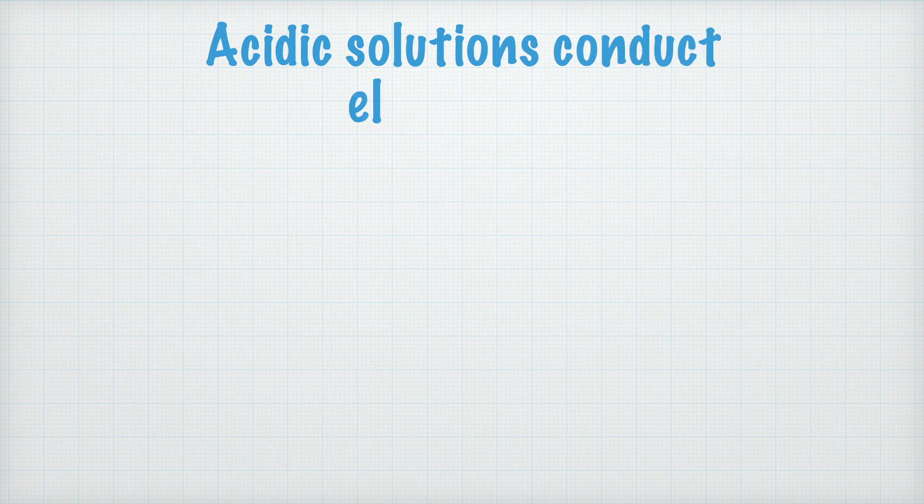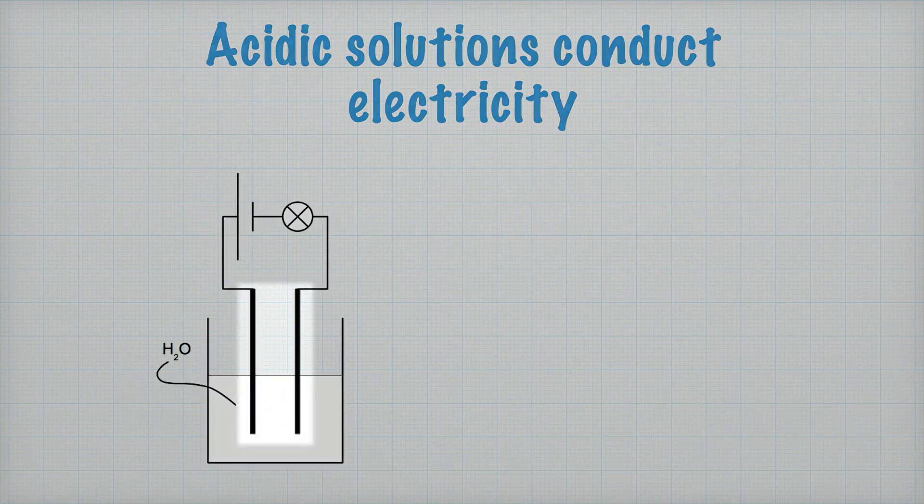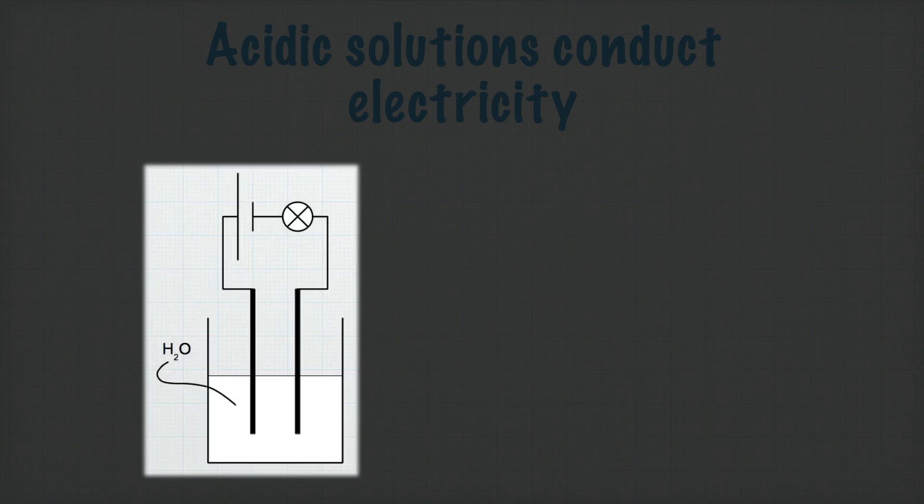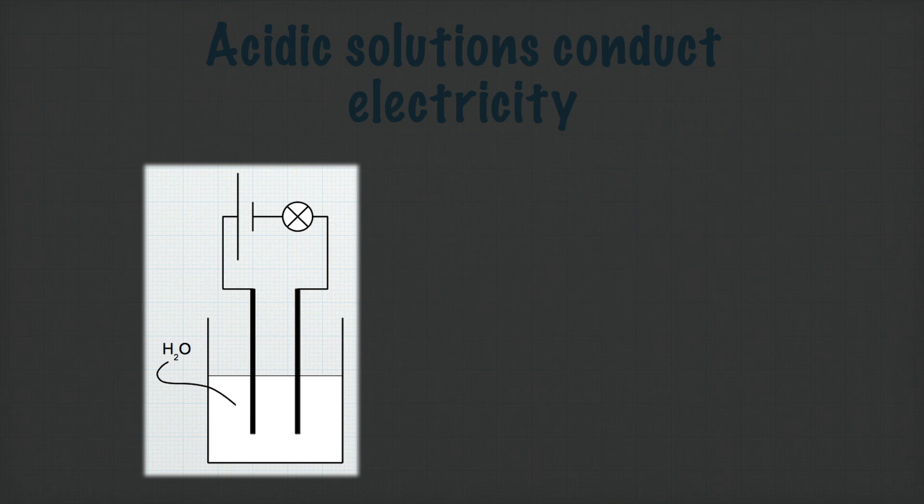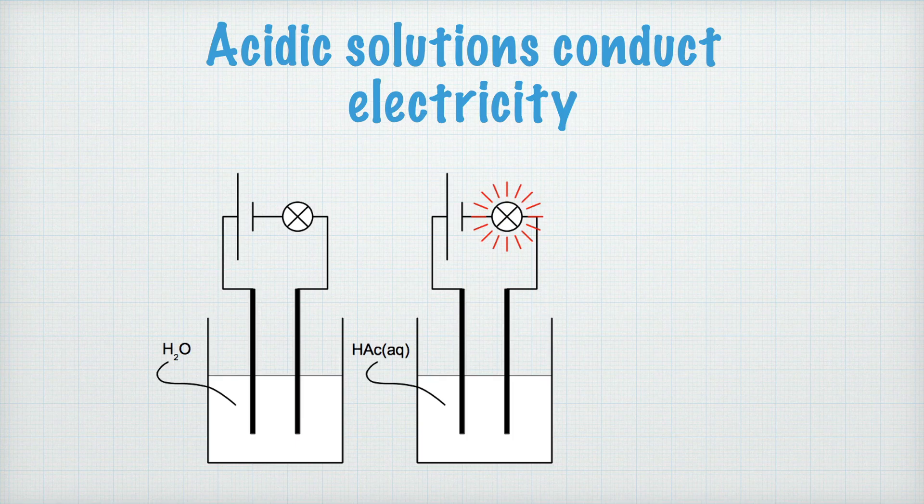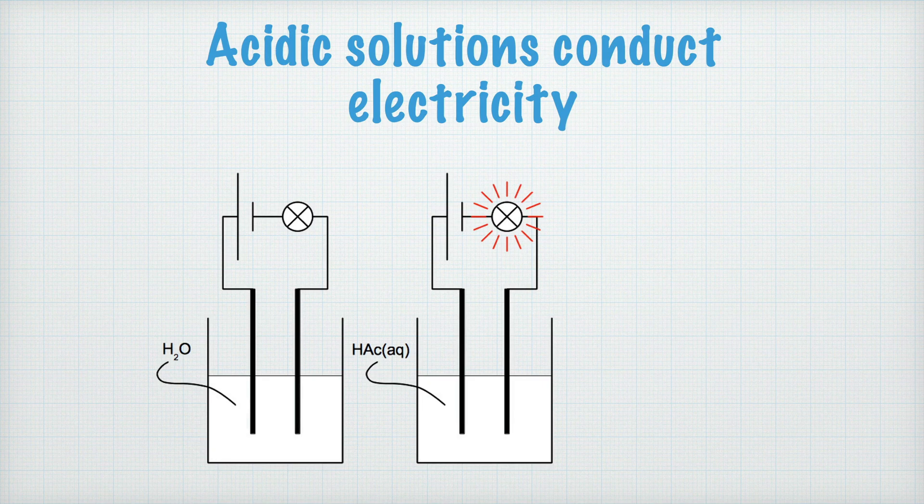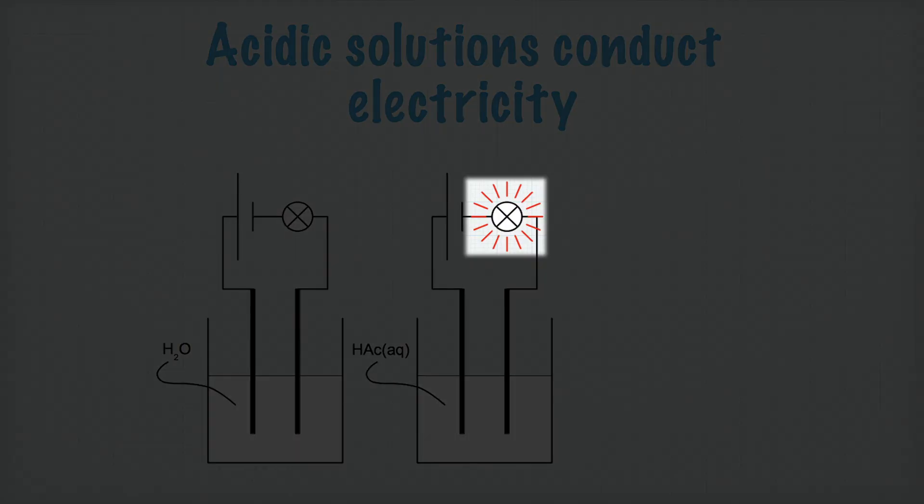Another property of acidic solutions is that they conduct electricity. Here, we draw a beaker of pure distilled water. I have two electrodes here, and have attached both to a battery and a small lamp. This solution does not conduct electricity. In the second beaker, there's instead some acetic acid. Acetic acid is often written HAc, as I've done here. Writing aq like this, as usual, indicates that it's dissolved in water. This solution will conduct electricity, and the lamp lights up like this.